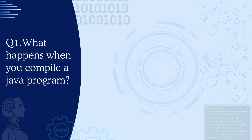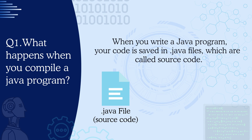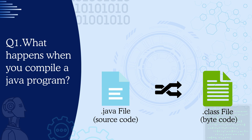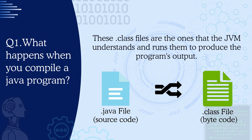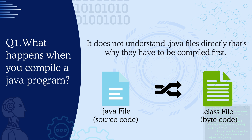Question 1: What happens when you compile a Java program? When you write a Java program, your code is saved in .java files, which are called source code. During compilation, these .java files are converted into .class files, also known as bytecode. Now these .class files are the ones that the JVM actually understands and runs to produce the program's output. It does not understand .java files directly, and that is why they have to be compiled first.